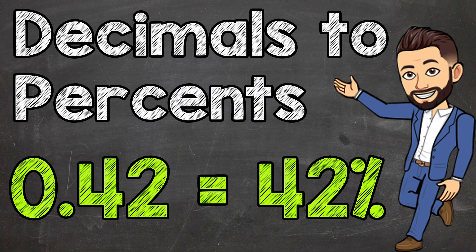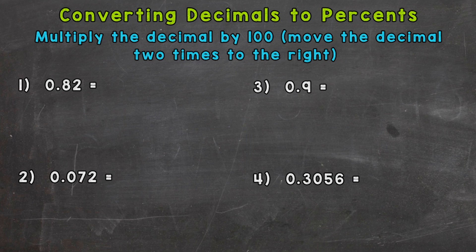Welcome to Math with Mr. J. In this video, I'm going to be covering how to convert a decimal to a percent. We do this by multiplying the decimal by 100, or moving the decimal two times to the right. We do this because percent means per 100, or out of 100, and multiplying that decimal by 100 gives us that per 100, or percent.